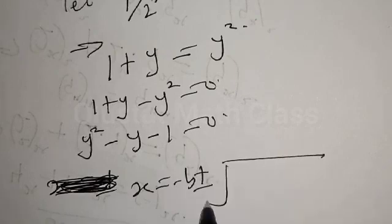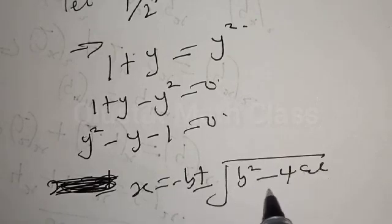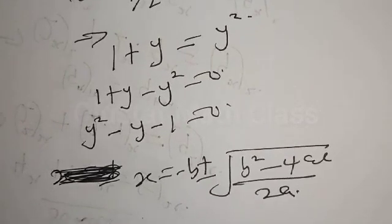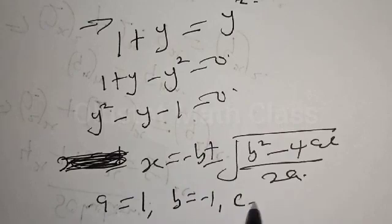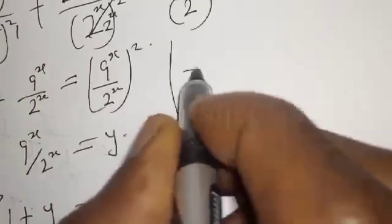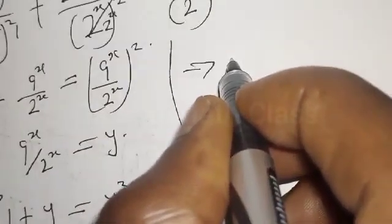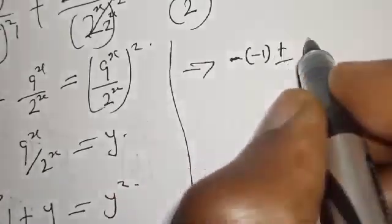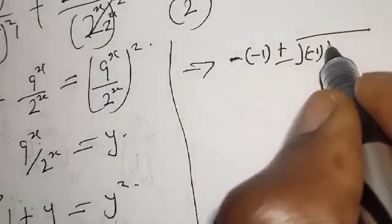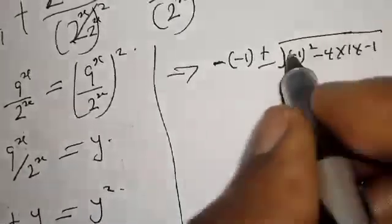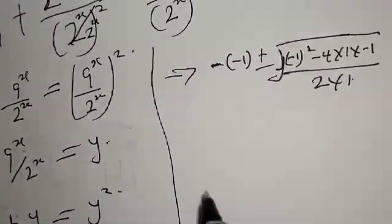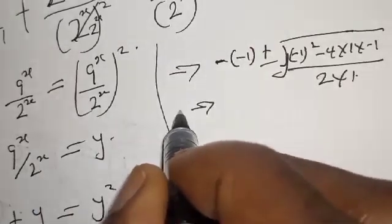Using the quadratic general formula: x equals negative b plus or minus square root of b squared minus 4ac, all over 2a. Our a equals 1, b equals negative 1, c equals negative 1. This implies we have negative of negative 1 plus or minus square root of negative 1 squared minus 4 times 1 times negative 1, over 2 times 1.